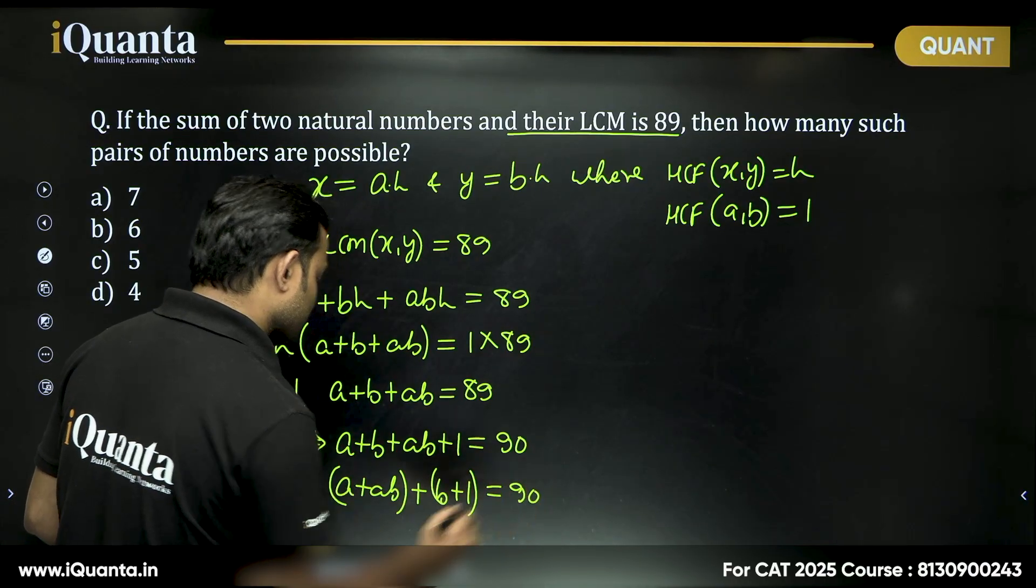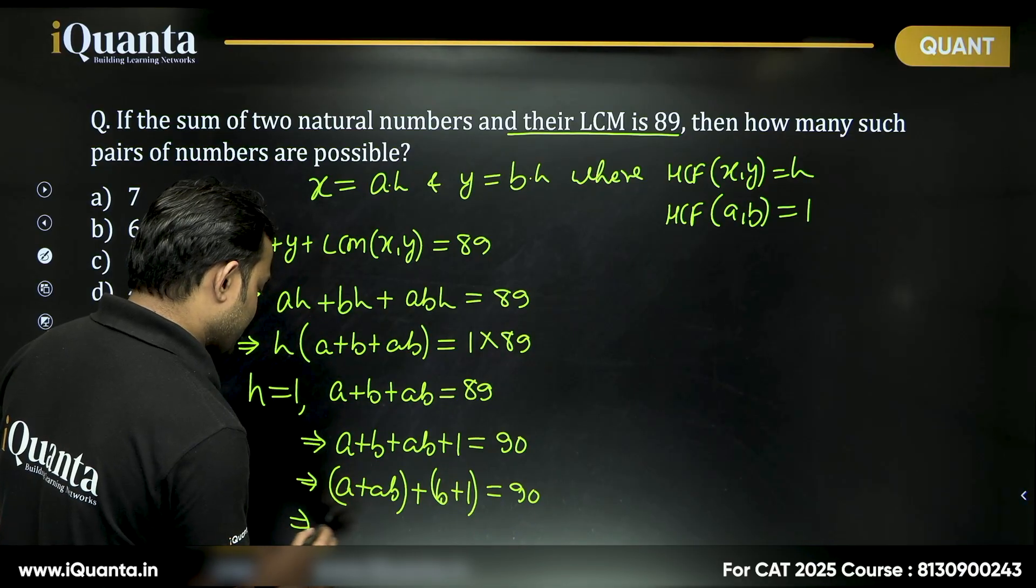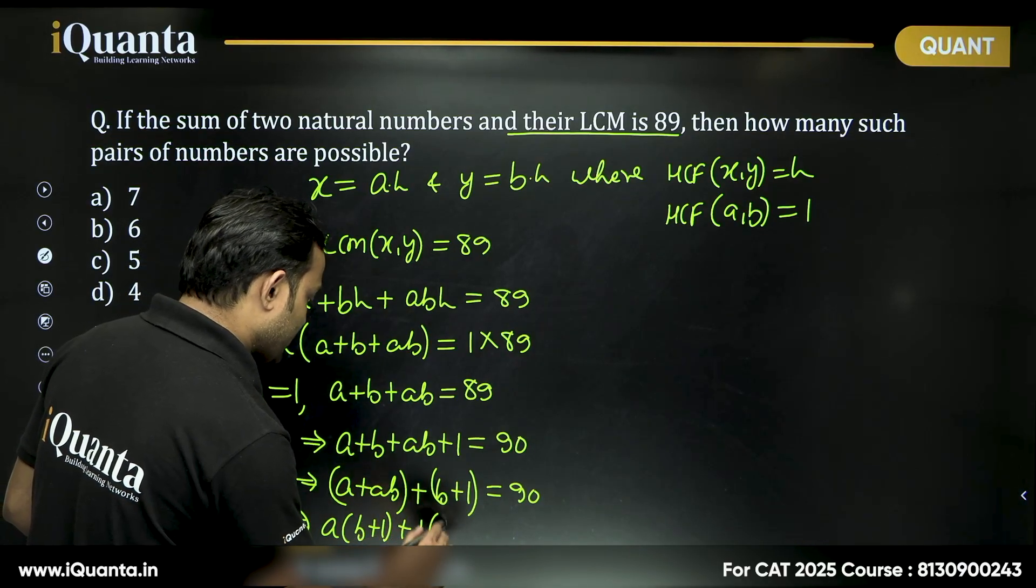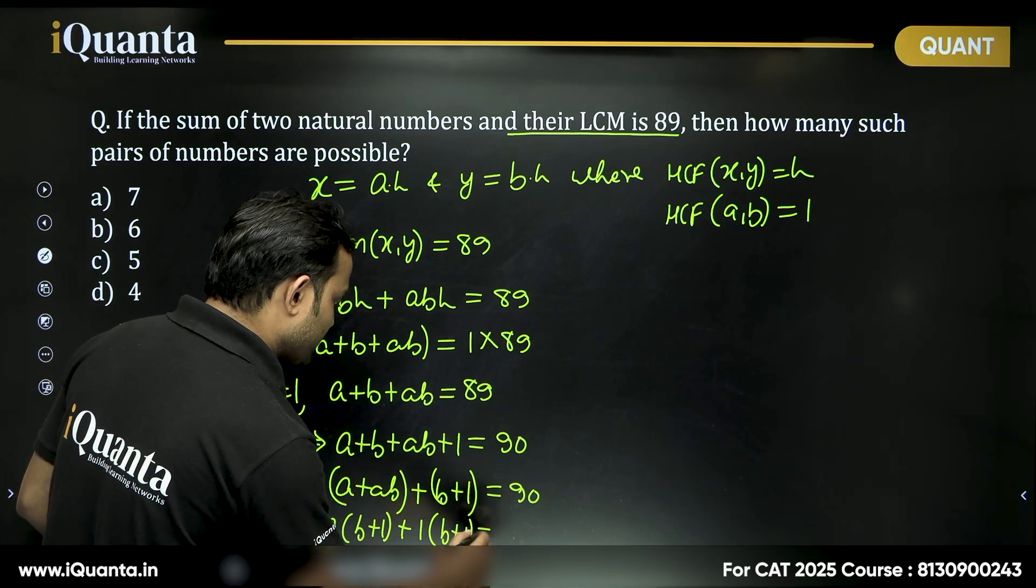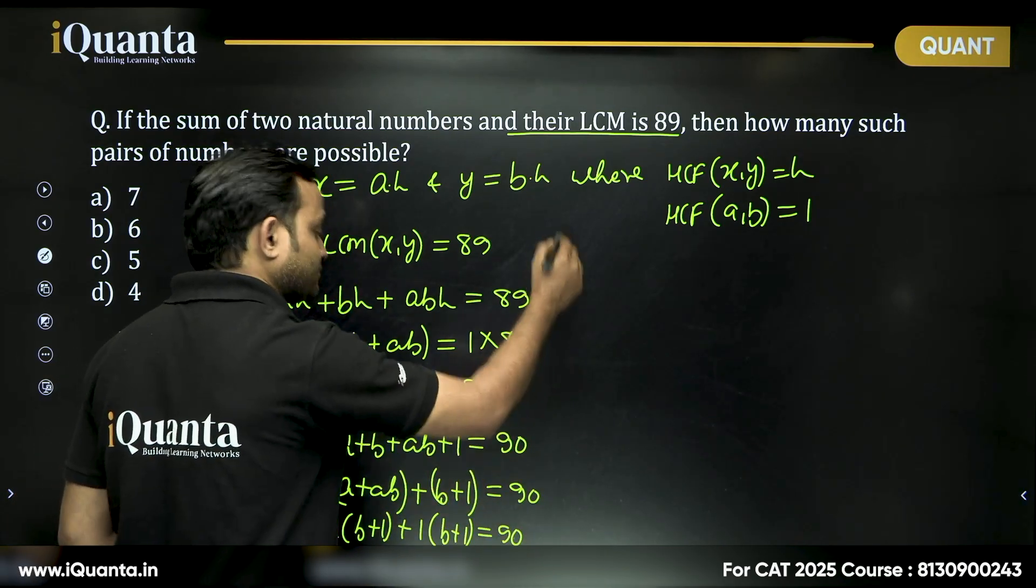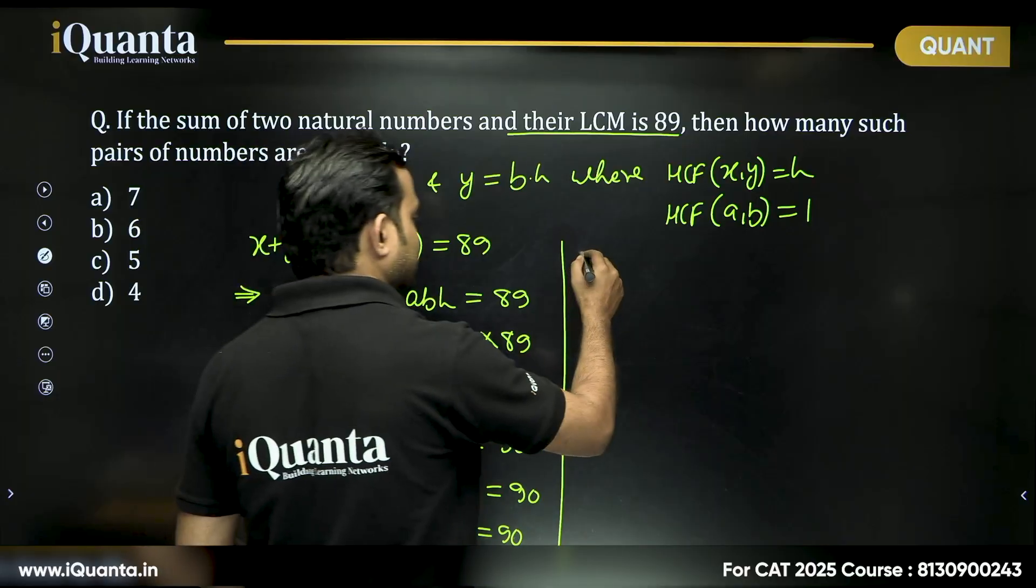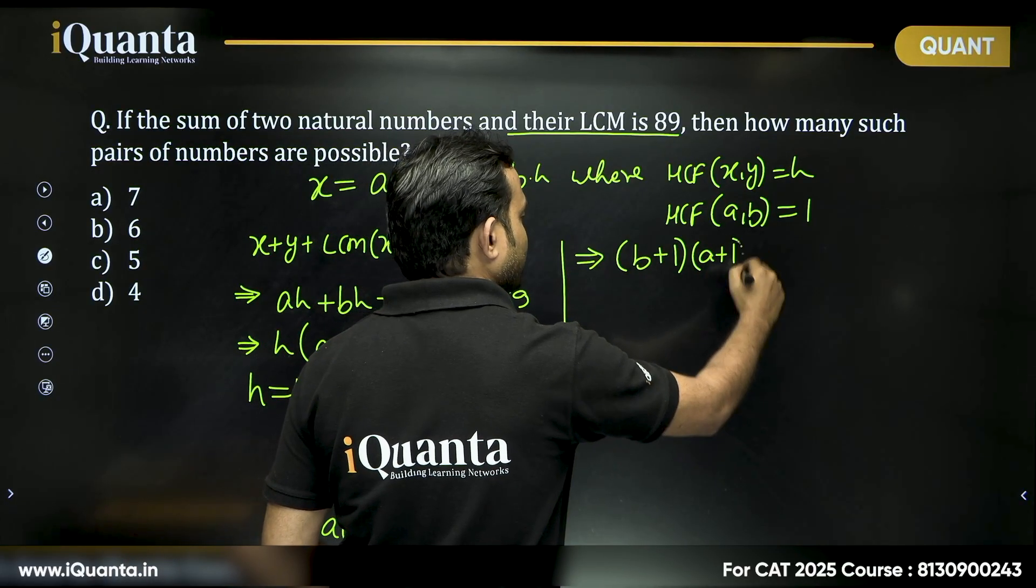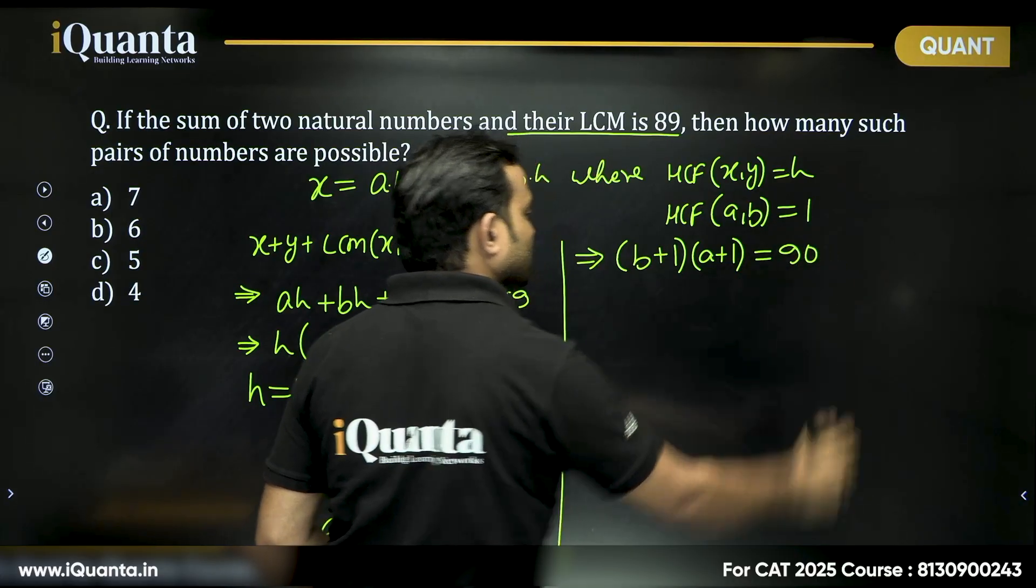From there, I can take A common, I get B plus 1. I get B plus 1, then 1 into B plus 1 will equal 90. From there, I can take B plus 1 common, and I can say (B plus 1)(A plus 1) will equal 90.